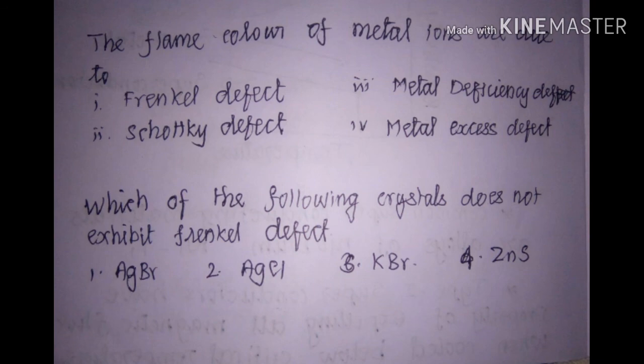The next question: the flame color of metal ions is due to which defect? The options are Frenkel defects, metal deficiency defect, Schottky defect, and metal excess defect. The color of the flame is due to the presence of free electrons in the crystal. In Frenkel and Schottky defects there are no free electrons. In metal excess defects, the vacancy positions created by absent anions are occupied by electrons, and these electrons give color in the flame. So metal excess defects cause the flame color.